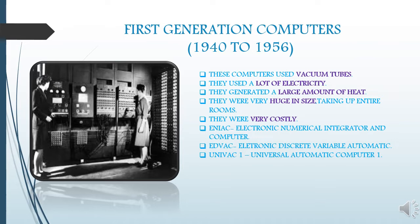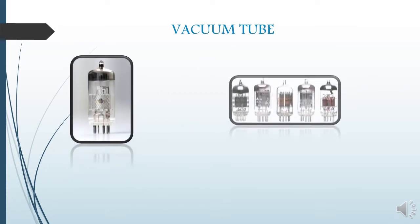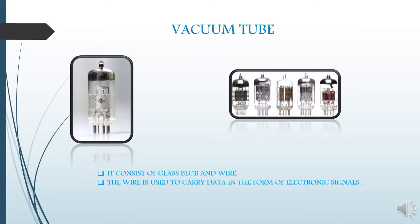Some examples of the first generation computers are ENIAC, EDVAC, and UNIVAC 1. A vacuum tube consists of a glass bulb and wire. The wire is used to carry data in the form of electronic signals.